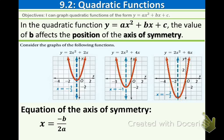If you recall from the previous lesson 9.1, we did not work with the value of b and today we'll be specifically looking at that value and seeing how it affects the graph. In the quadratic function y equals ax squared plus bx plus c, the value of b affects the position of the axis of symmetry. That is really important.